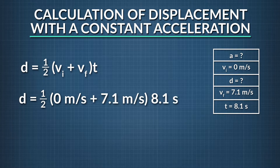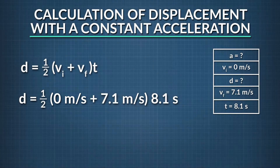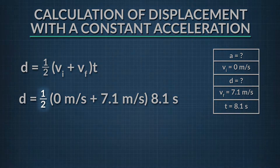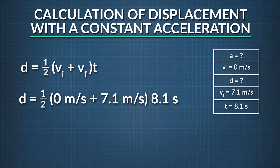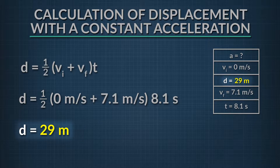So when we plug in those values and take 7.1 meters per second plus zero, then multiply that times one half times the time, which was 8.1 seconds, we find our answer to be 28.755. But if we round that to two significant figures, that is 29 meters. So the displacement of the car was 29 meters.